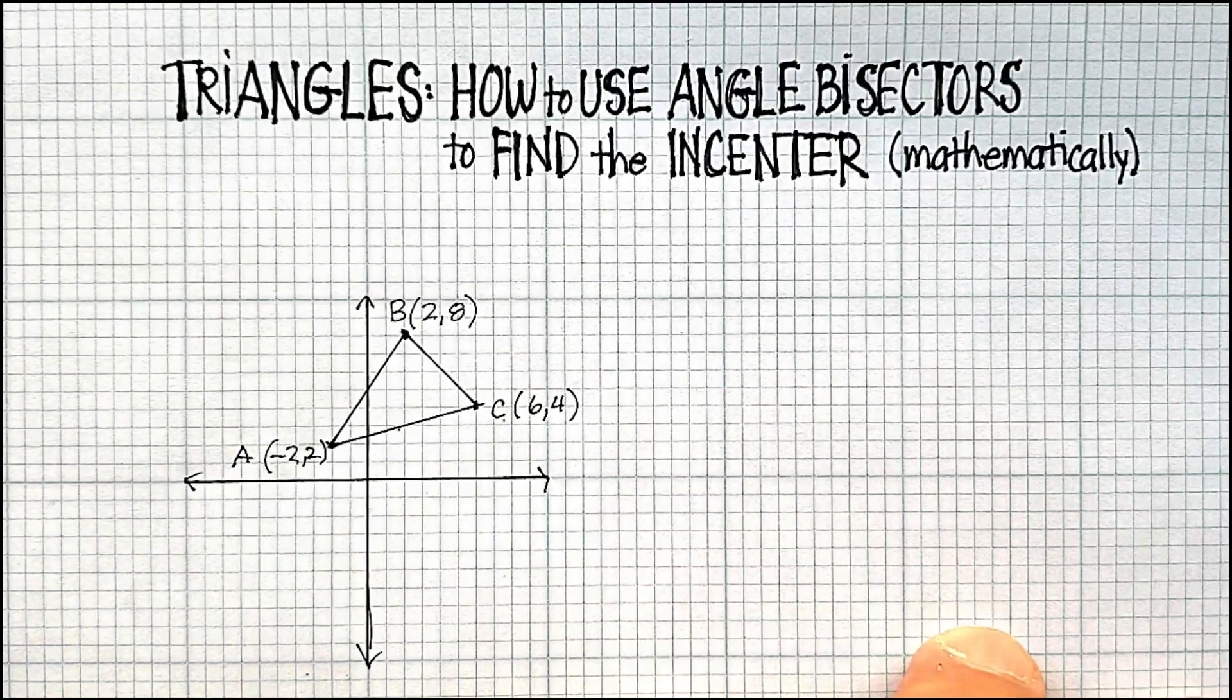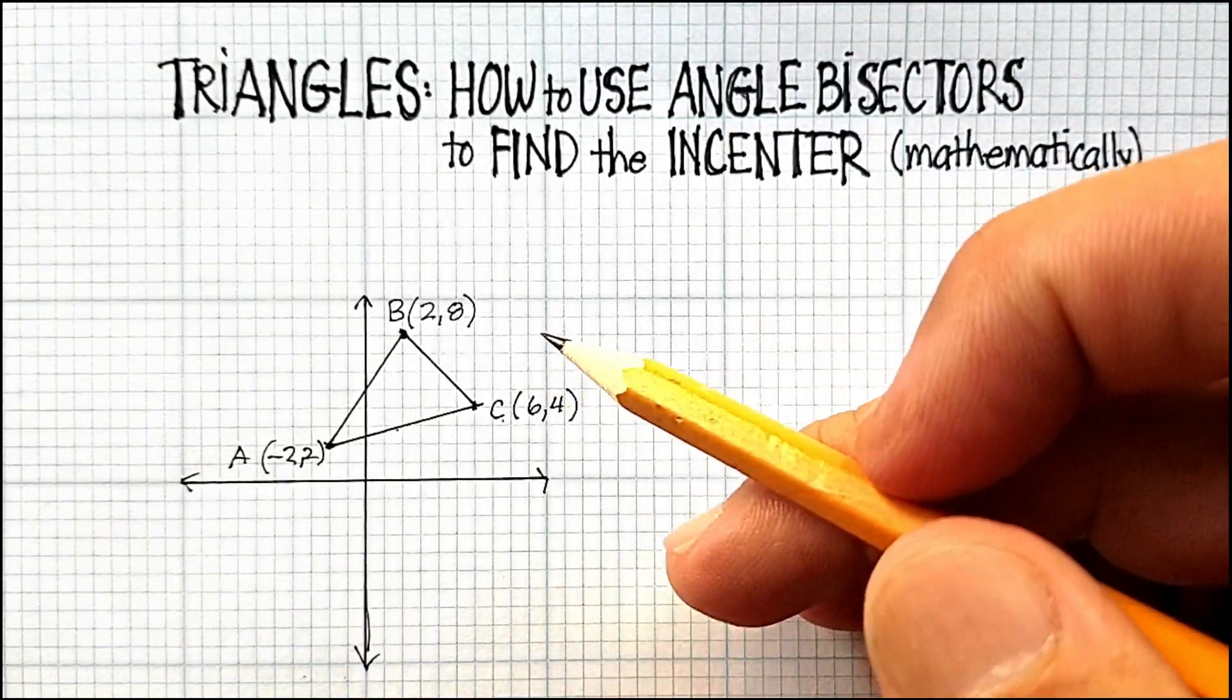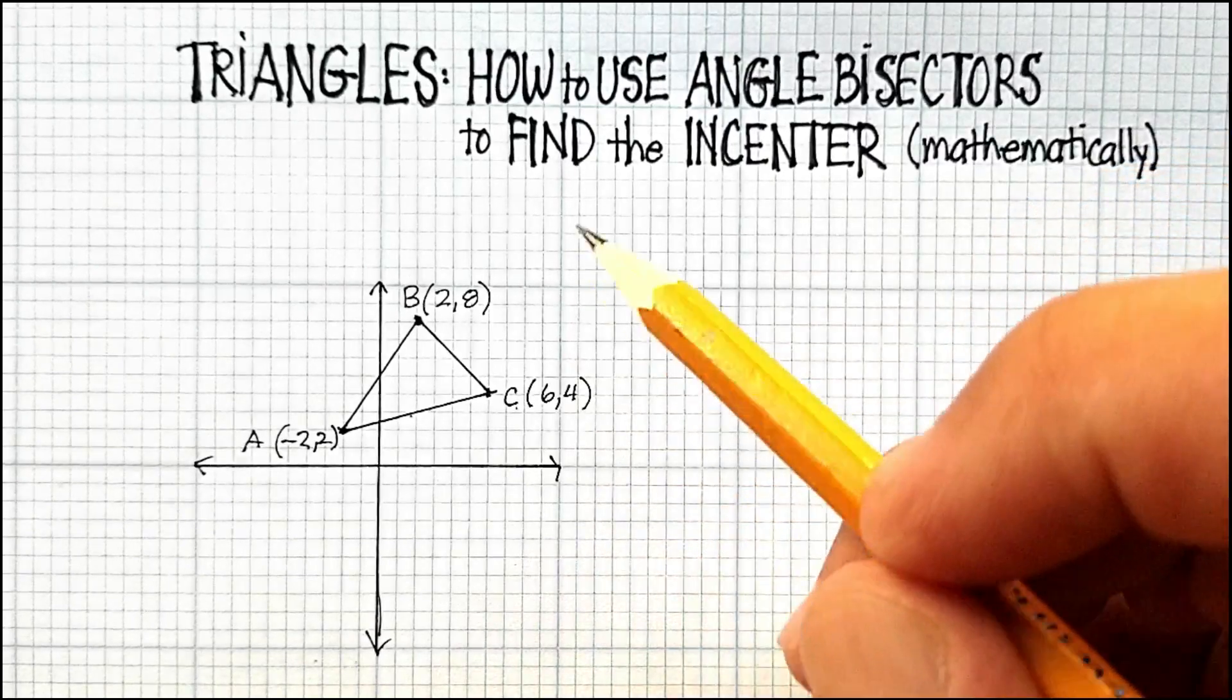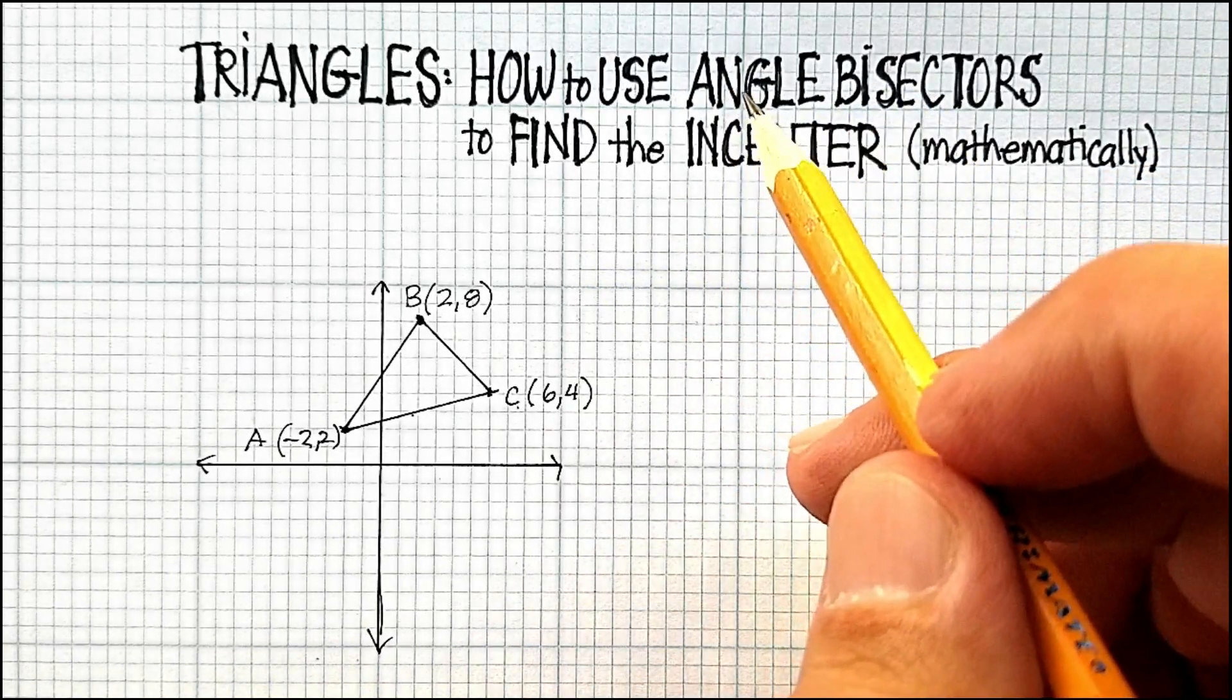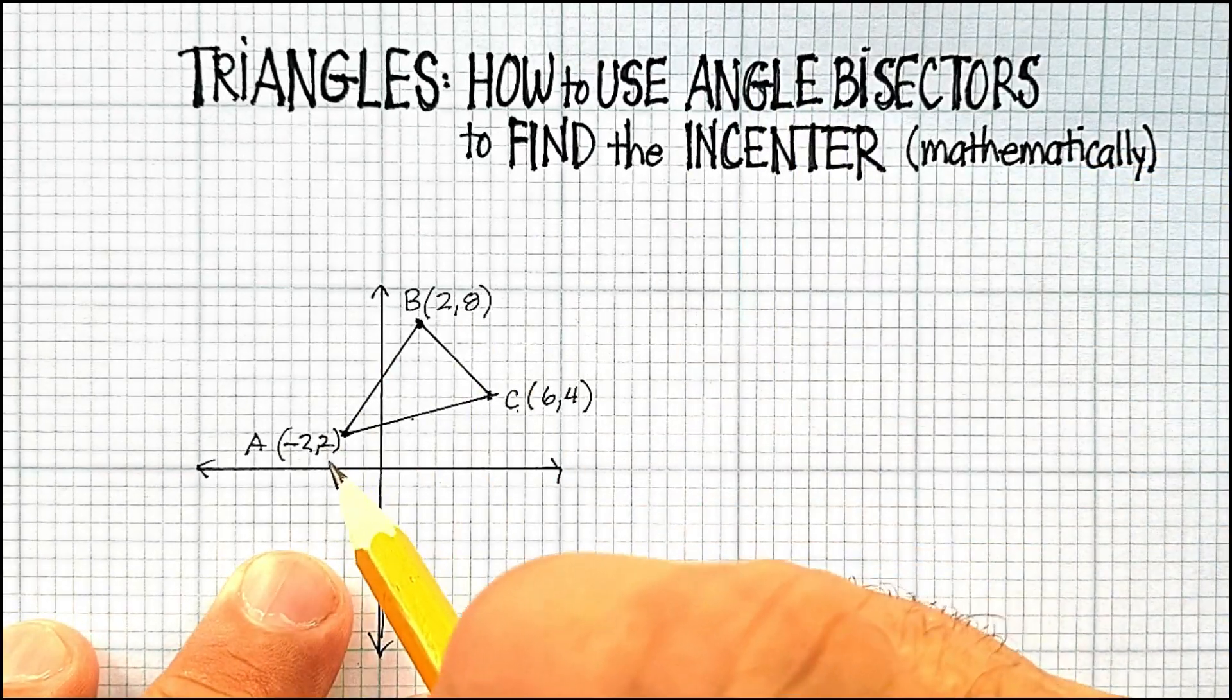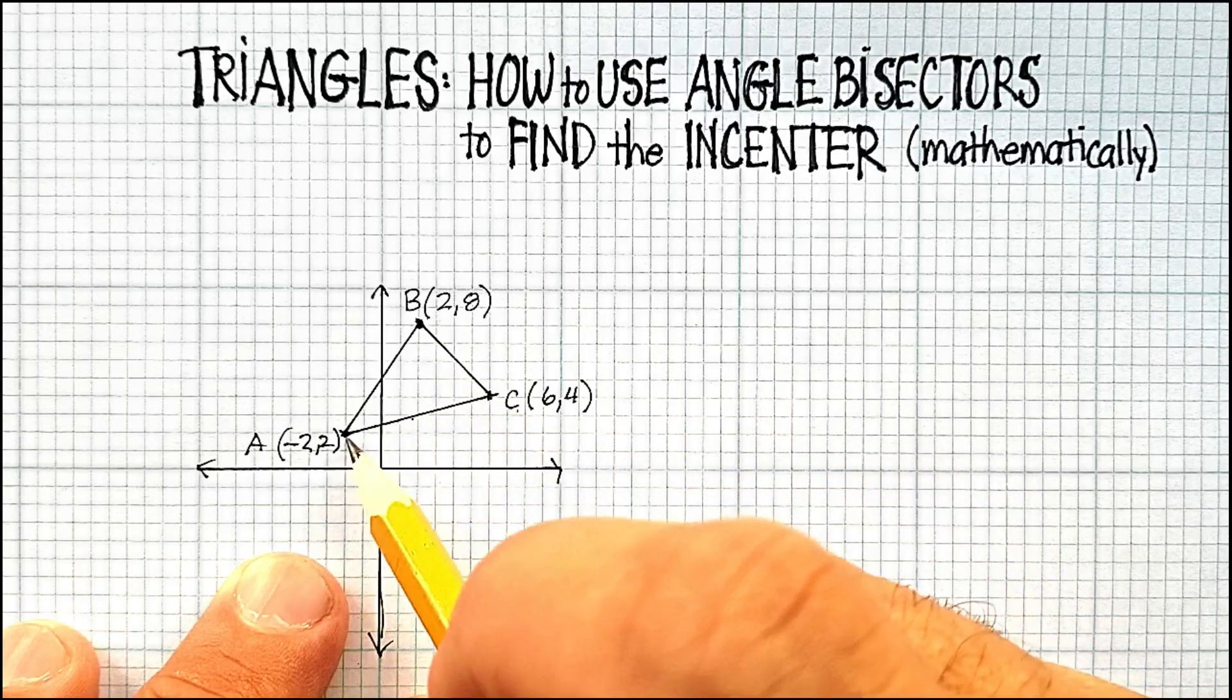Okay, in this video we're going to go over how to find the incenter of a triangle using angle bisectors. Now angle bisectors are lines that basically divide each angle of a triangle exactly in half.